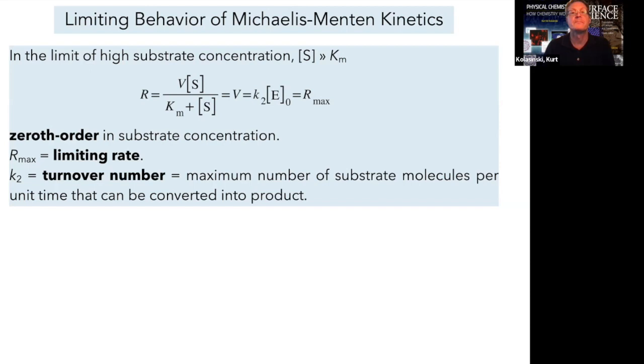K2, that's also called the turnover number, which is the maximum number of substrate molecules per unit time that can be converted into product.